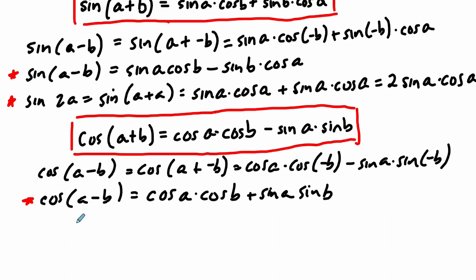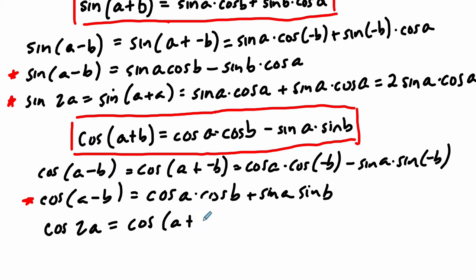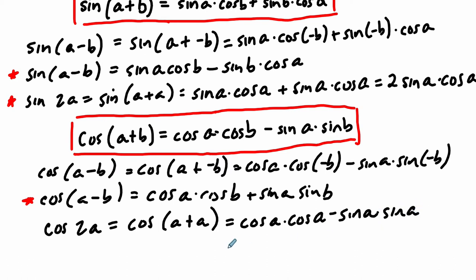We can do the same thing for cosine. The cosine of 2A equals cosine of A plus A, which equals cosine A times cosine A minus sine A times sine A. This breaks down in interesting ways: cosine of 2A equals cosine squared A minus sine squared A.